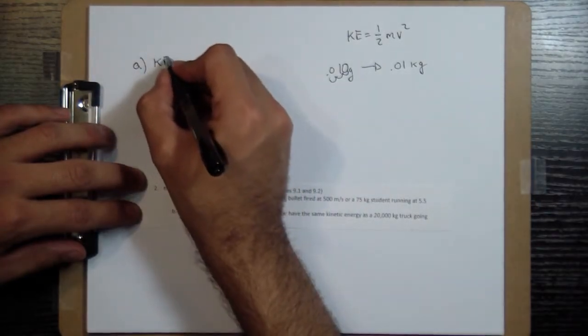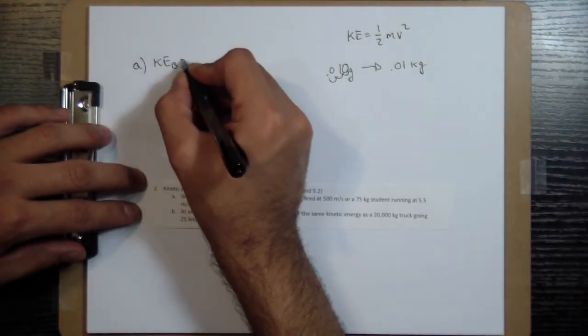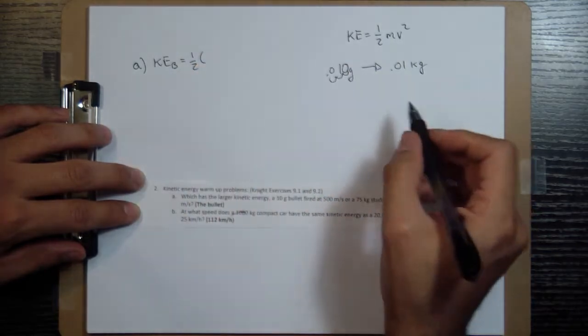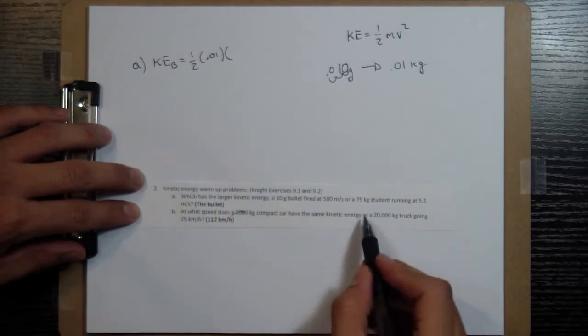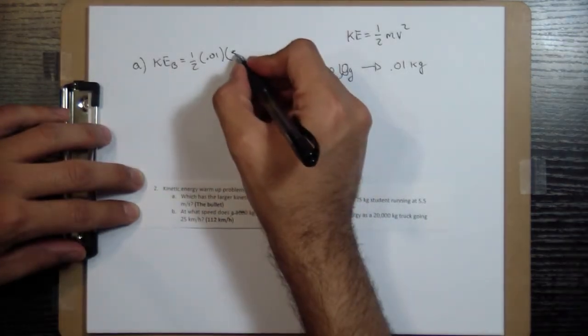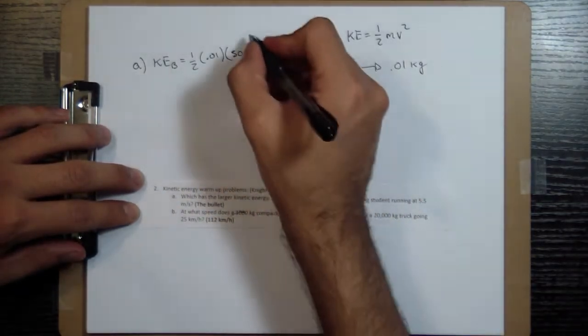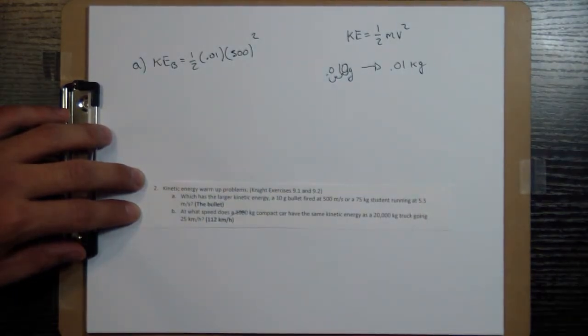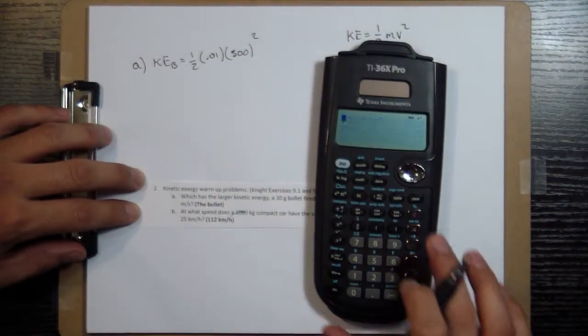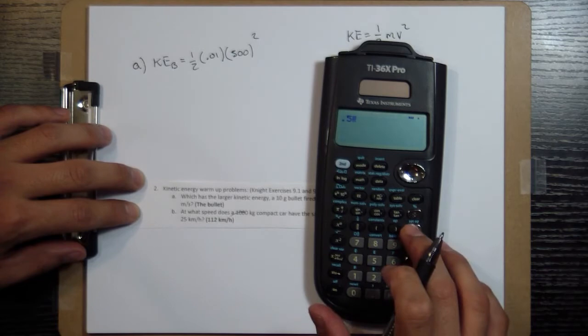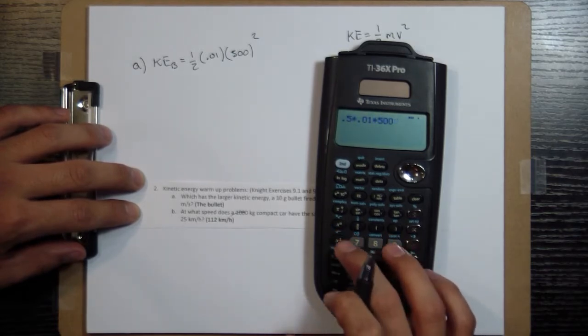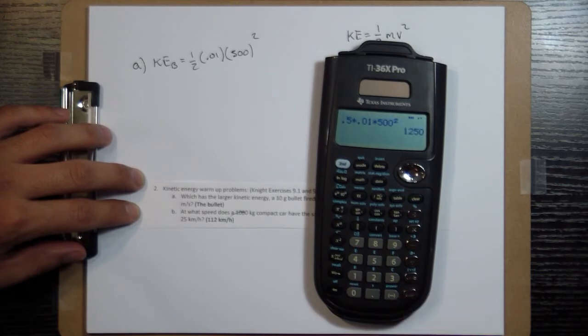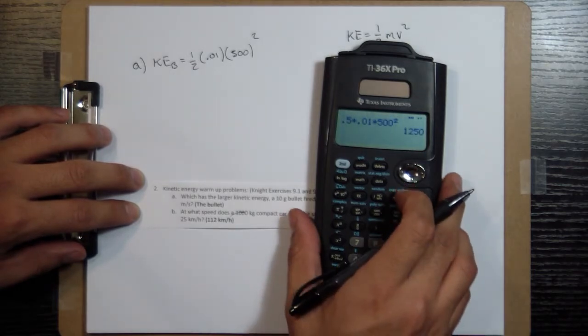So then, the kinetic energy for the bullet will be equal to 0.5 times this mass, 0.01, times its speed, 500 squared. And if I get a calculator, I'm going to have 0.5 times 0.01 times 500 squared gives me 1250.